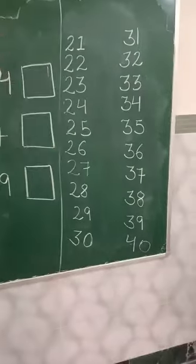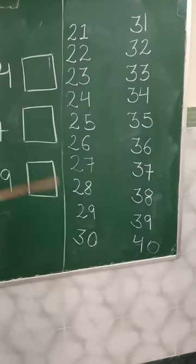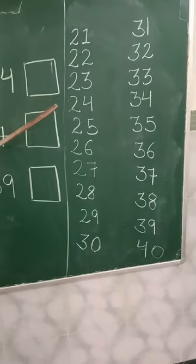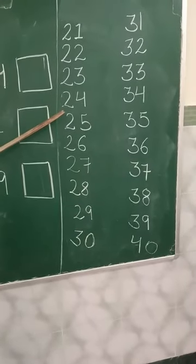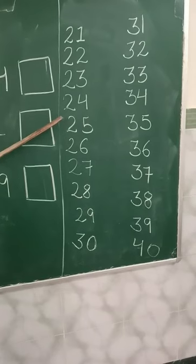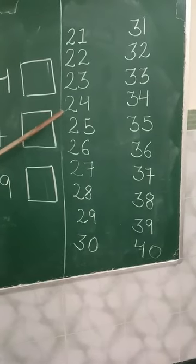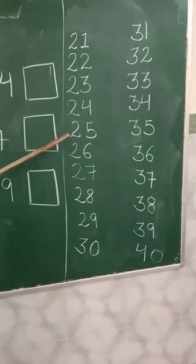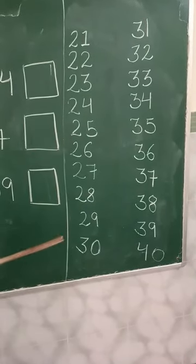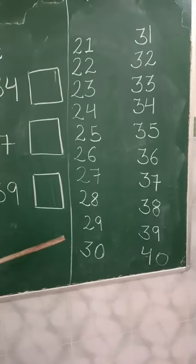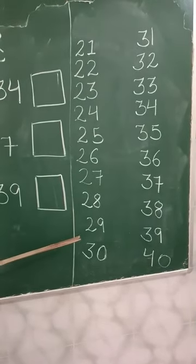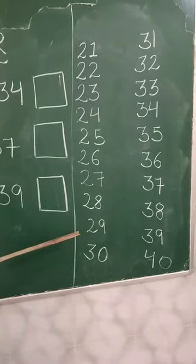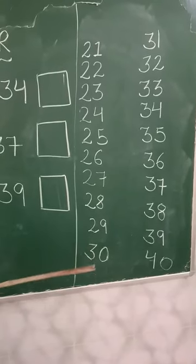Students, see here the numbers are given. Let us take one example. What comes after 24? Or we can say, what is the next number after 24? 25. Let us take one more example. What comes after 29? 30.